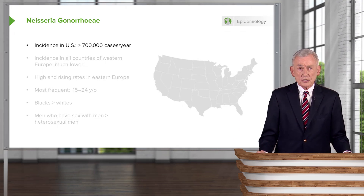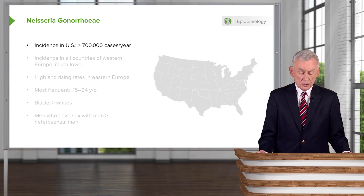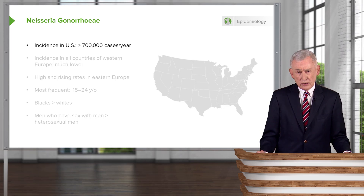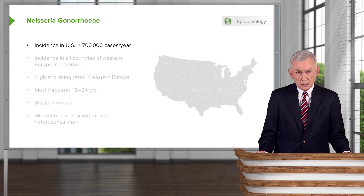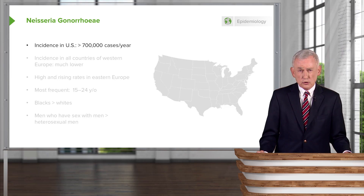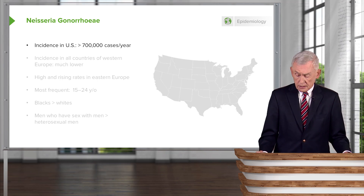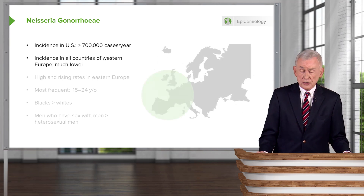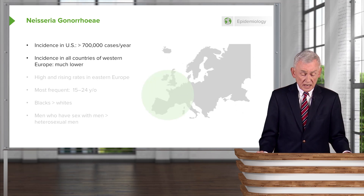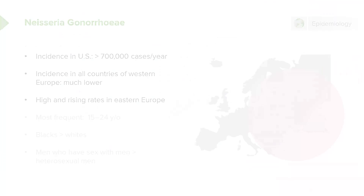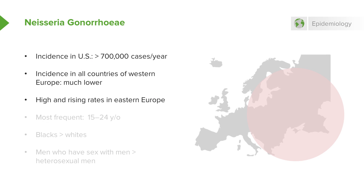One of the most infamous of these organisms that cause urethritis is Neisseria gonorrhoeae, which has a fairly strikingly high incidence in the United States of more than 700,000 cases per year. The incidence in all the countries of Western Europe is much lower than in the United States. However, there are high and rising rates of urethritis due to this organism in Eastern Europe.